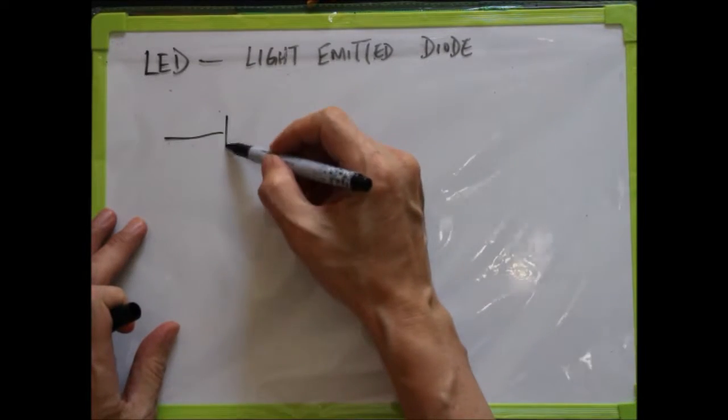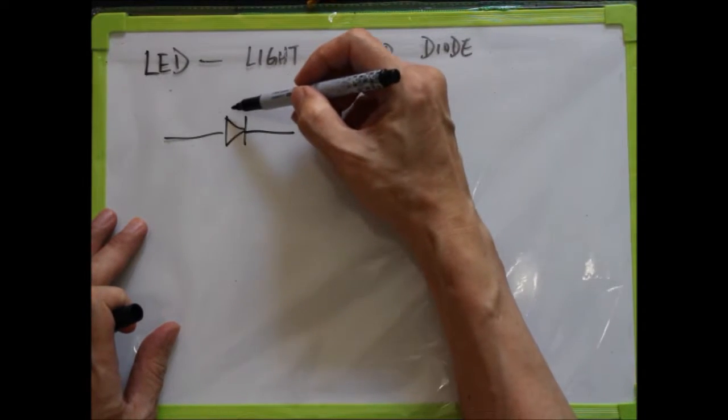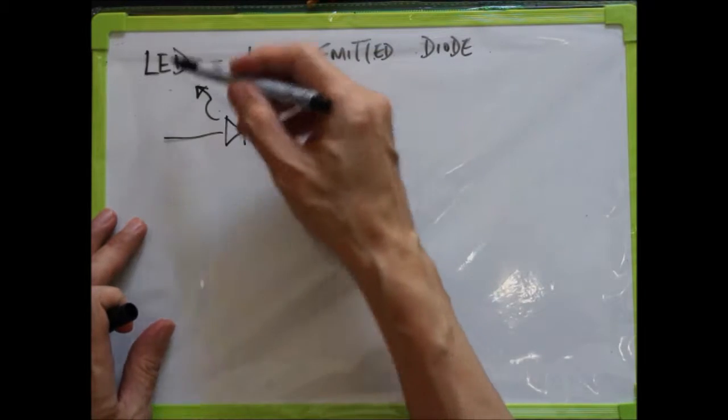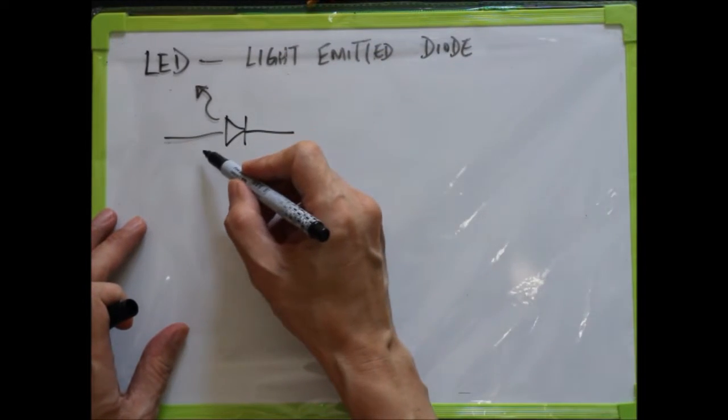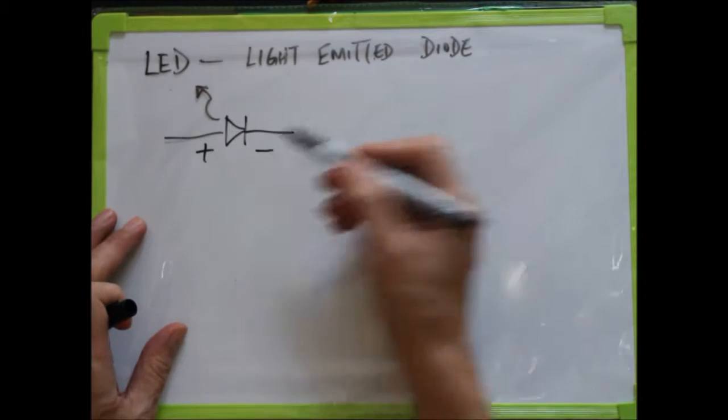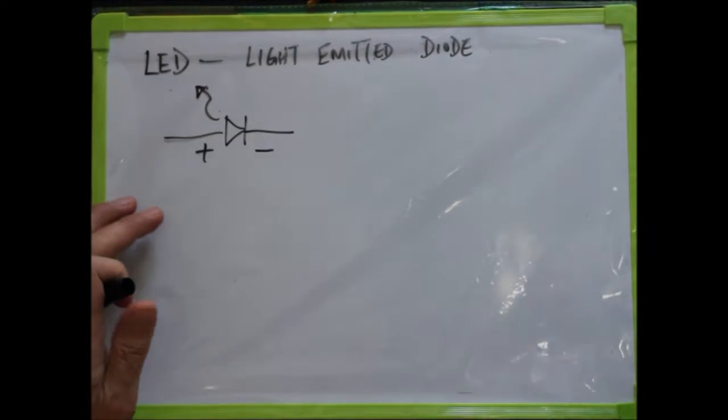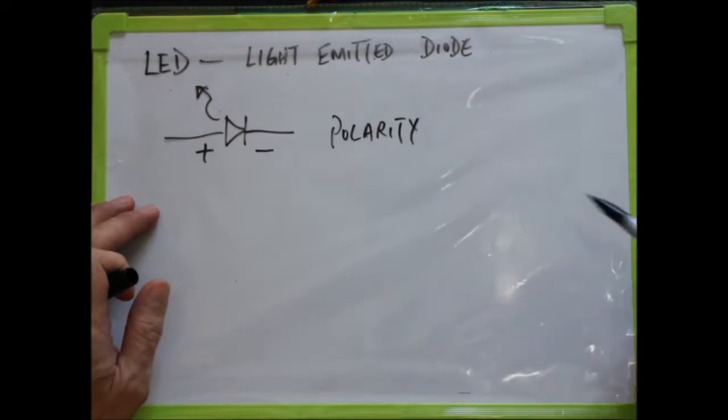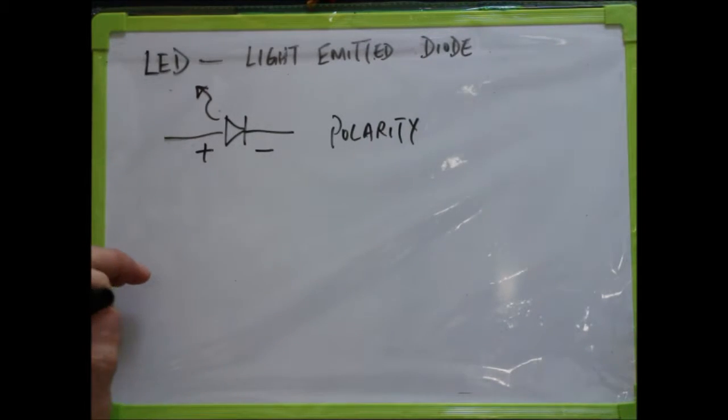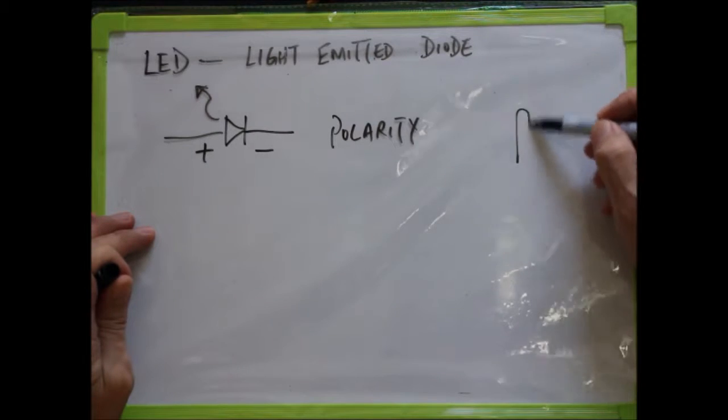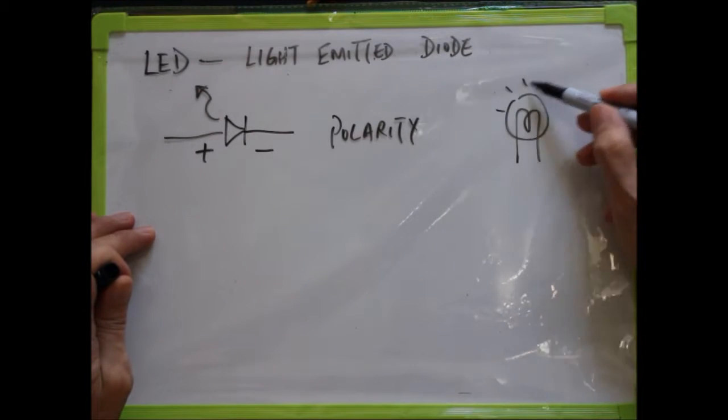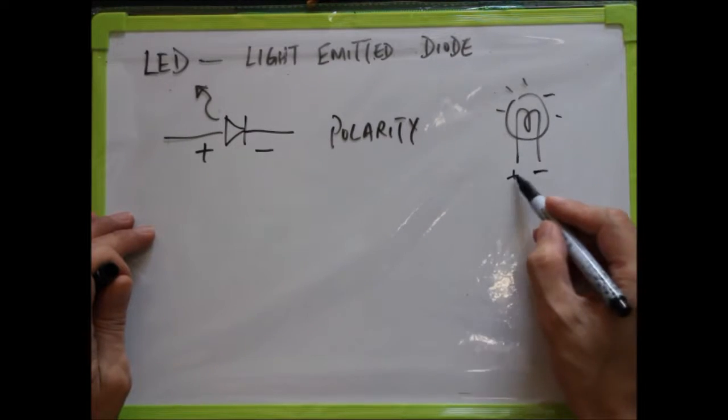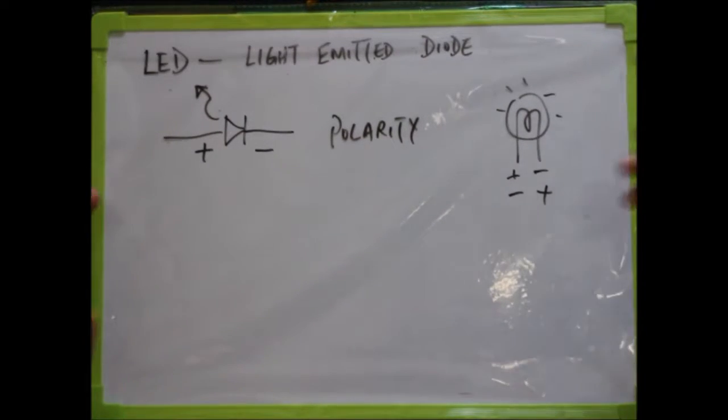On the schematic, we will usually see a diode symbol with arrows indicating light coming out. They have polarity just like a diode, with positive and negative. If you connect it the wrong way, the LED will be blown out. It's not like a lamp bulb where the symbol has no polarity, so the lamp will light up regardless of connection direction.